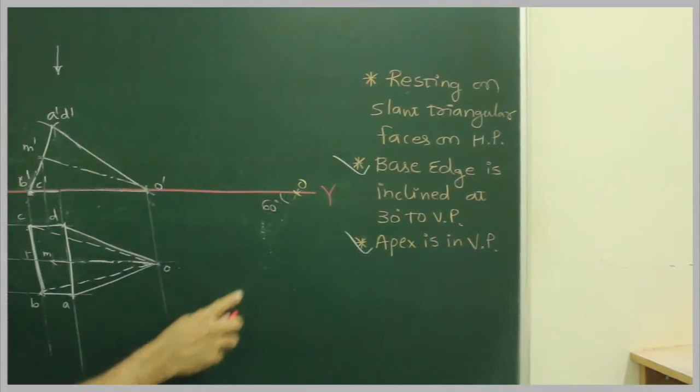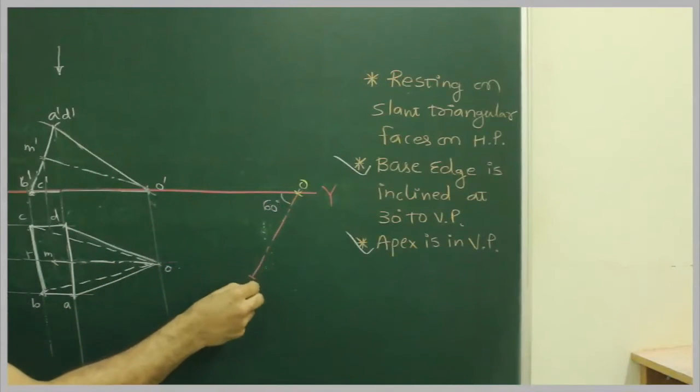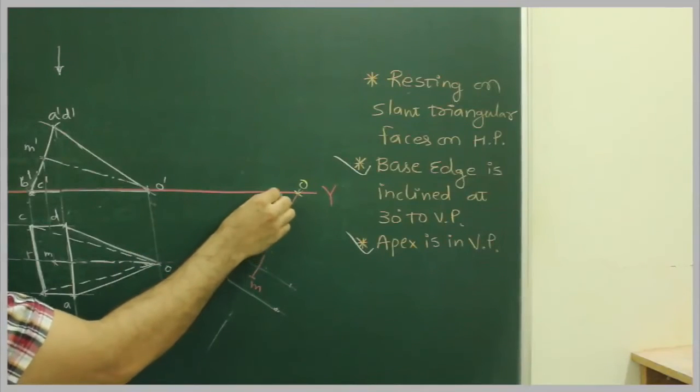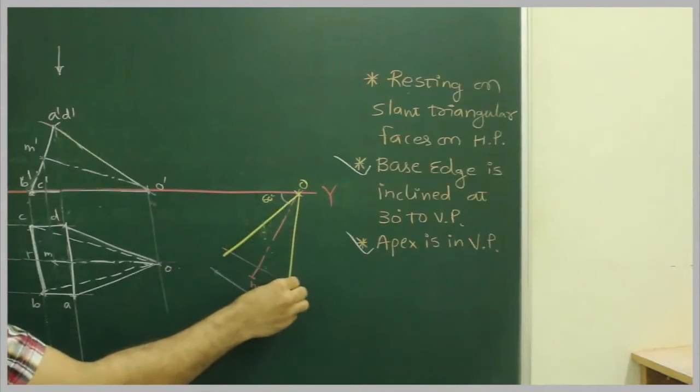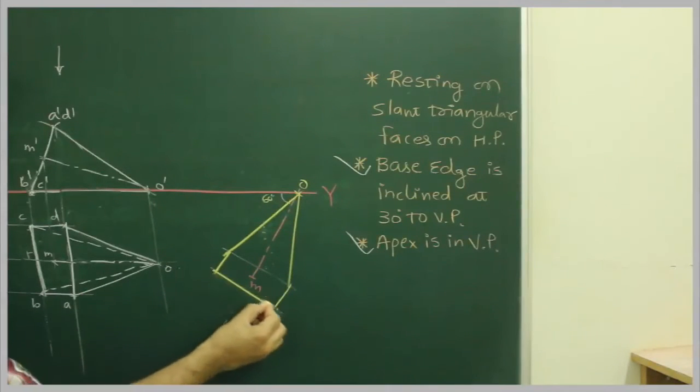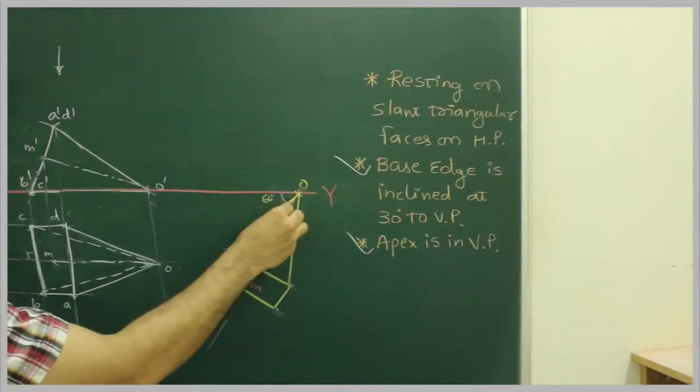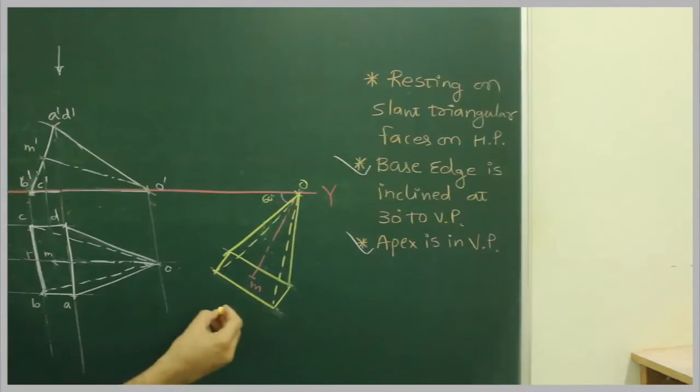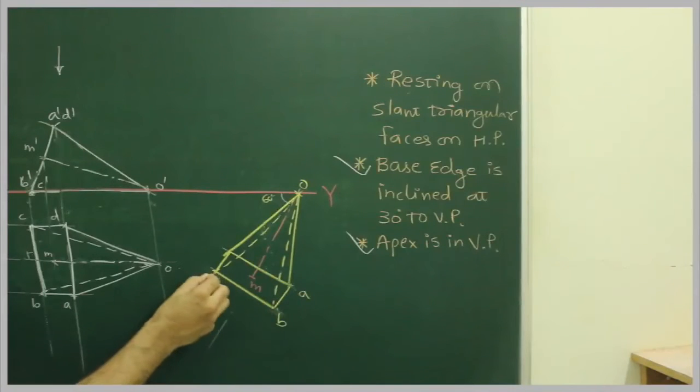Then I will mark axis. I will retrace this diagram completely. So this is A, B, C, D. This is M.